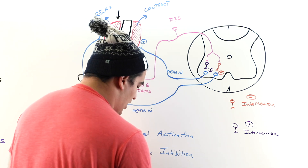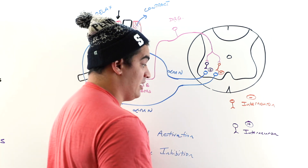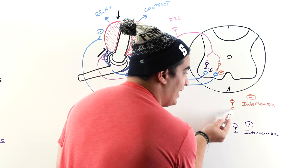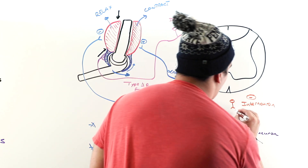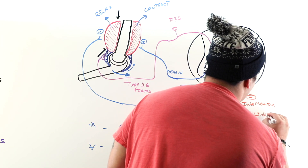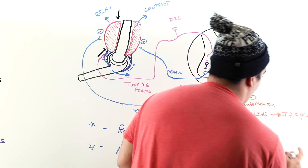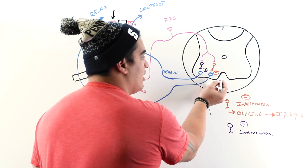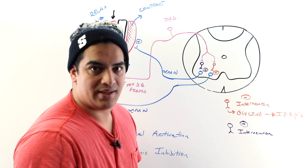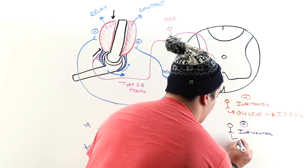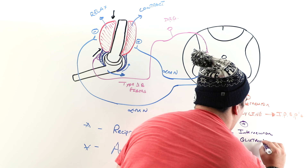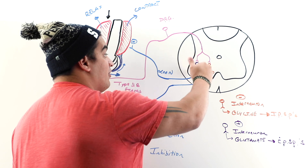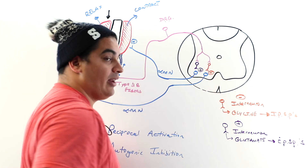The difference between inhibitory and stimulatory interneurons depends on the neurotransmitters released. The inhibitory interneuron releases glycine, which generates IPSPs (inhibitory postsynaptic potentials) — causing negative ions to rush in or positive ions to rush out, hyperpolarizing the cell. The stimulatory interneuron releases glutamate, an excitatory neurotransmitter that generates EPSPs (excitatory postsynaptic potentials), causing cations to flow in, depolarizing the cell and leading to action potentials.